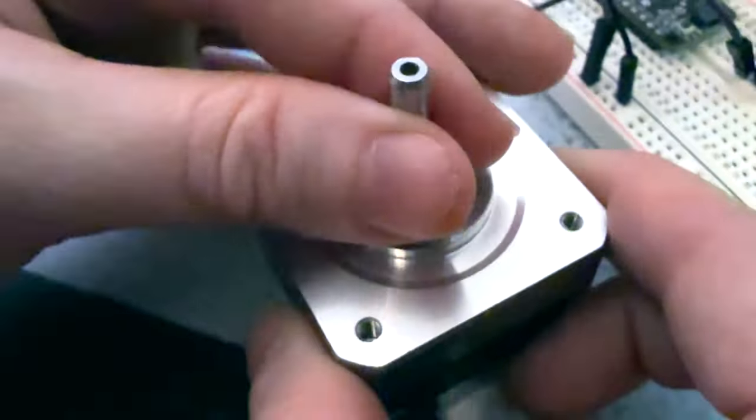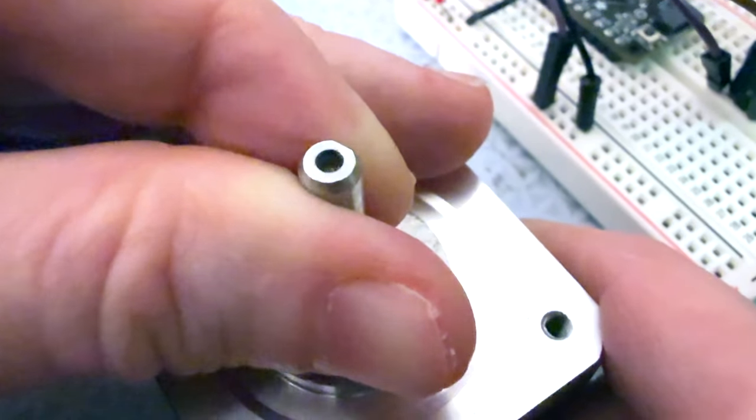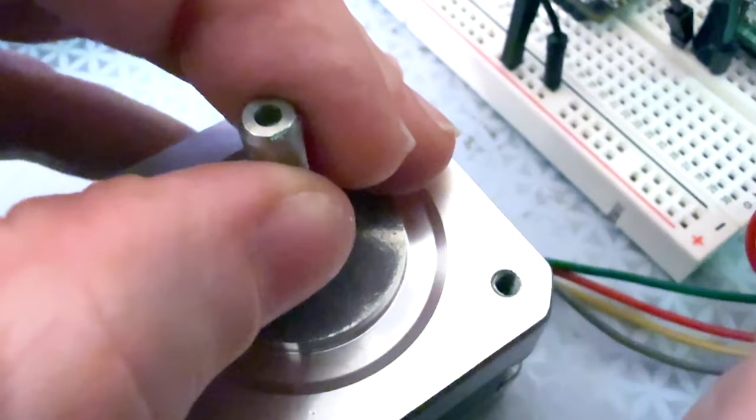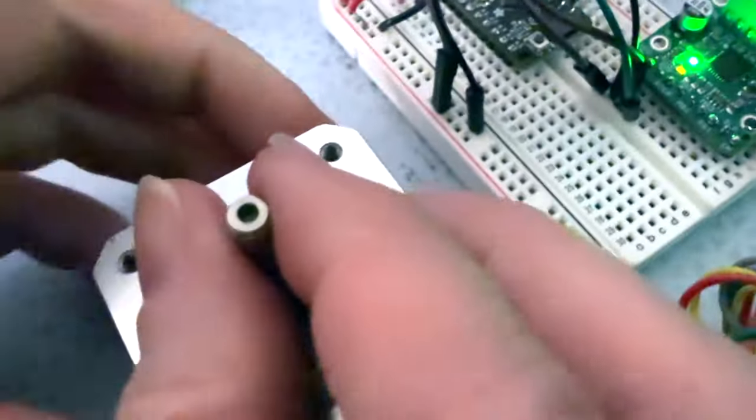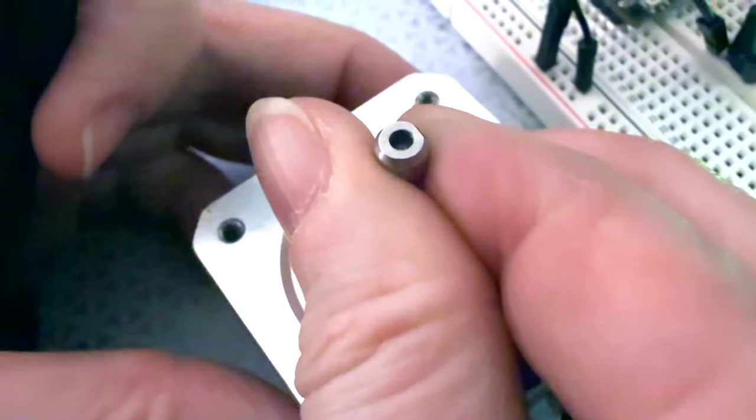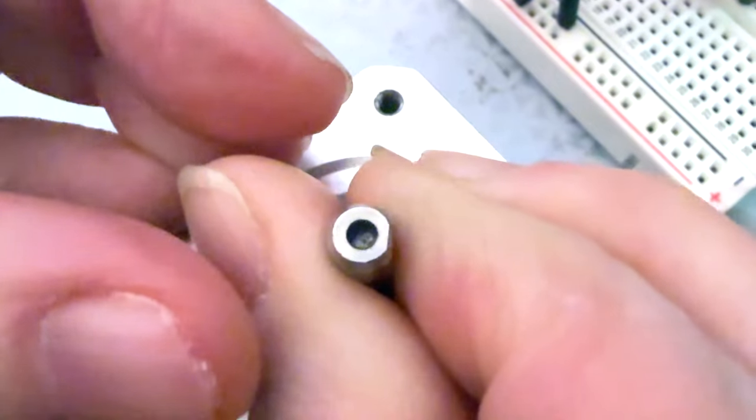So this is the stepper motor. And so what I'm testing right now is the torque, because you can set the torque with this potentiometer. And right now it's set to the lowest torque. So I can hold it and you see it's not moving. Like the little dashed part's not moving. I can hold it with my fingers.